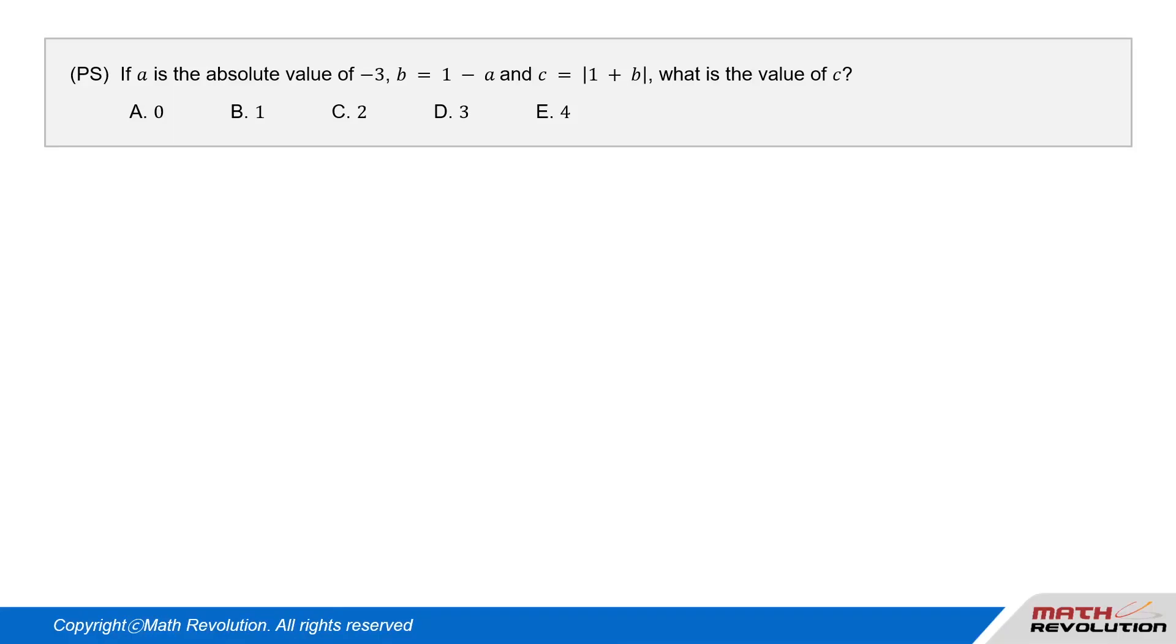Question P.S.: If A is the absolute value of -3, B equals 1 minus A, and C equals the absolute value of 1 plus B, what is the value of C?